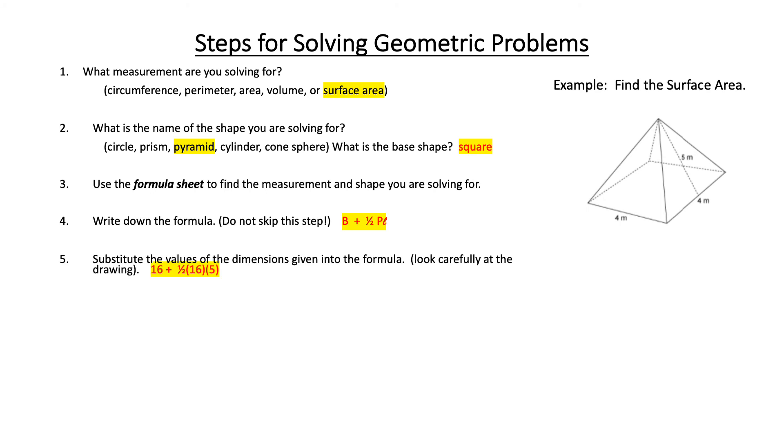Substitute the values so we say the area of the base is 4 times 4. Plus 1 half times the perimeter of the base. Perimeter is also 16 because it's 4 plus 4 plus 4 plus 4. And the slant height is 5.